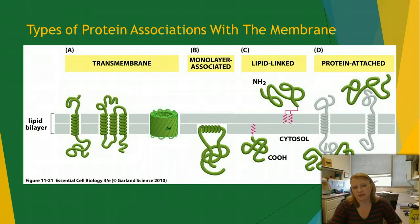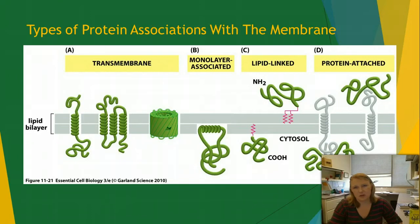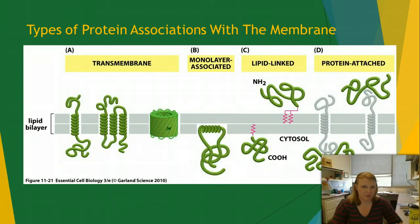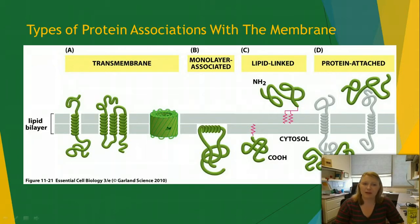We then have monolayer-associated proteins, which are only associated with either the inside or outside of the cell but don't span the whole membrane — they're just stuck on one side or the other. The last two types are lipid-linked proteins, which are attached to a lipid within the cell membrane, and protein-attached proteins, where another protein binds to a transmembrane protein or something else attached to the membrane. Make sure you can list these associations and explain them.